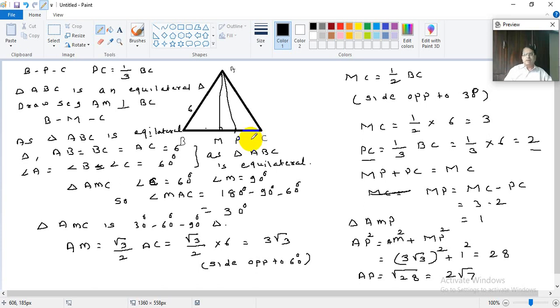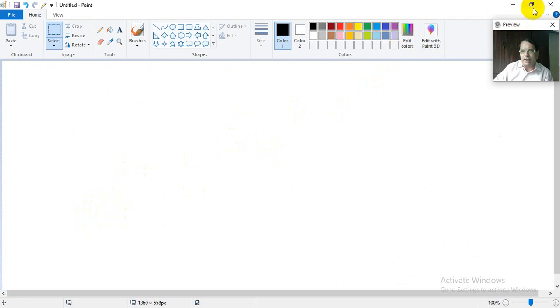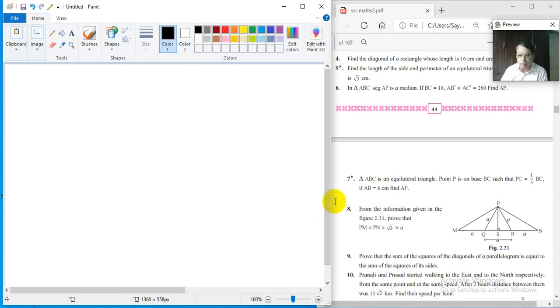The problem is on the chapter Pythagoras theorem. Somewhere we have to use Pythagoras theorem. Because any problem related with this chapter will finally somewhere use either Pythagoras theorem or Apollonius theorem or the geometric mean theorem. So accordingly this problem is done. I hope you understood this. Very simple problem. Now coming to next problem, we will go for problem number 8.